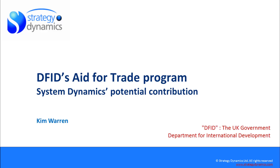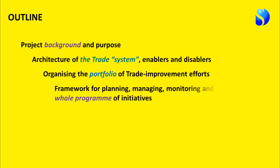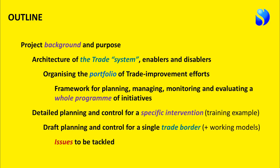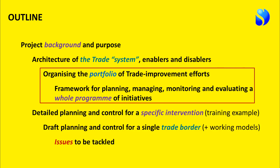This is the second presentation in the series looking at the possible contribution that System Dynamics can offer to assist with the UK Department for International Development's Aid for Trade programme. In the first part of the presentation we looked at the project background and purpose and set out the architecture of the trade system. In this presentation we're going to look at how we can use that picture of the trade system to organise the portfolio of trade improvement efforts, and develop a framework for planning, managing, monitoring and evaluating a whole programme of initiatives.